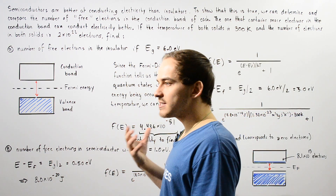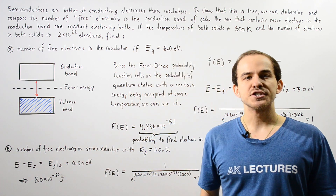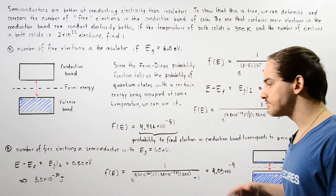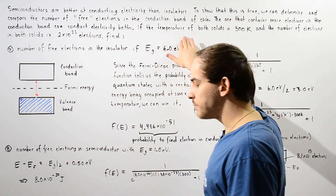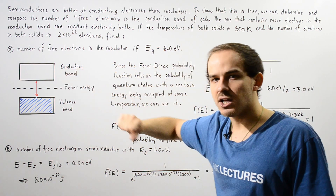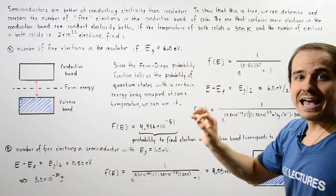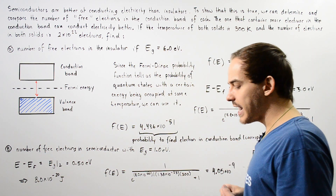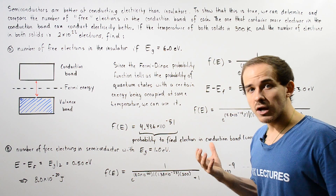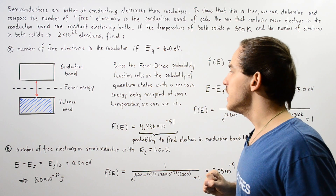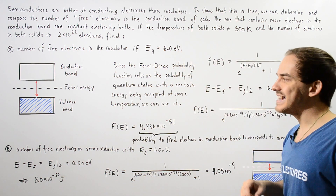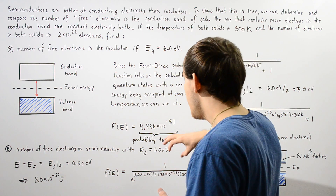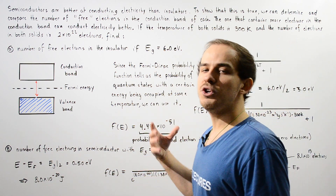The conduction band of our solid contains the electrons responsible for creating electric current and therefore responsible for creating conductivity. We make the assumption that the temperature of both solids — the insulator and the semiconductor — is 300 Kelvins, and that each solid contains 2×10²² electrons. In part A, we find the number of free electrons in the conduction band if the gap energy between the valence band and the conduction band is 6 eV. In part B, we find the number of free electrons in the semiconductor if the gap energy E_G equals 1 eV.